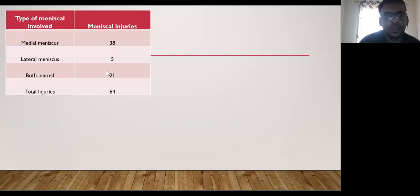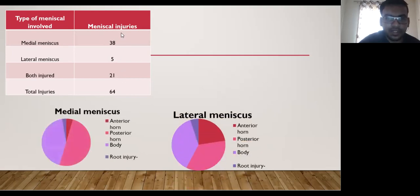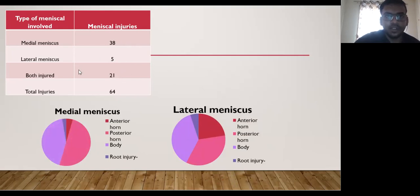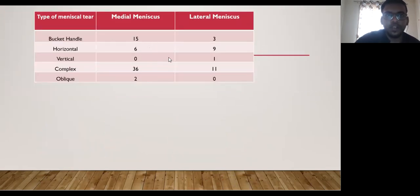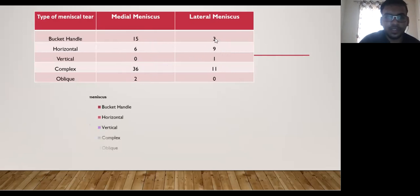Regarding statistics from the 64 studies: in 21 cases, both lateral and medial menisci were involved, while in 38 cases only one was involved. In terms of meniscal portion affected, the posterior horn and body were most commonly involved for both medial and lateral menisci, with anterior horn and root injuries less frequent. Among complications, 19 cases showed osteochondral defects with cartilage thinning and loss, and loose bodies were also noted. For tear type, in medial meniscus injuries the most common was a complex tear seen in 36 cases, followed by bucket handle tears. In the lateral meniscus, complex tears were most common, followed by horizontal tears.